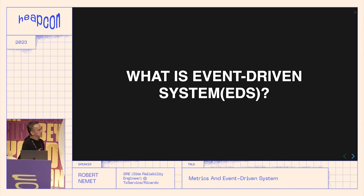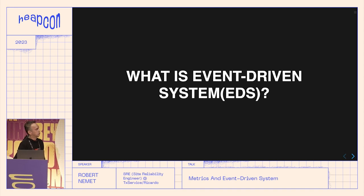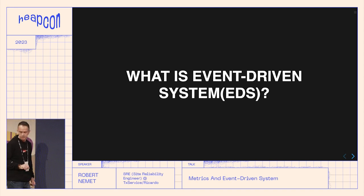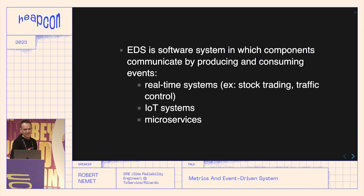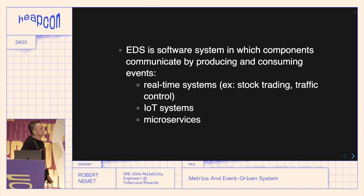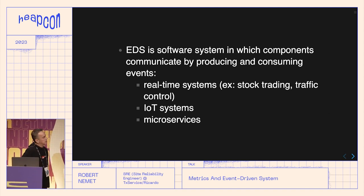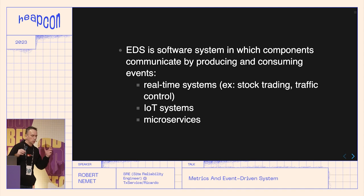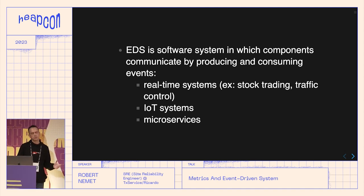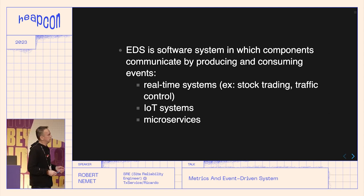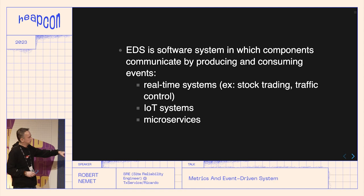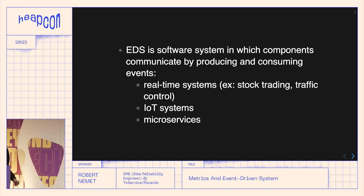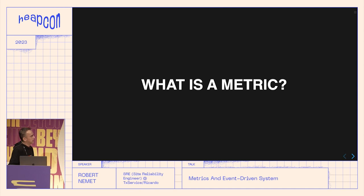This is when we hit the bottleneck: what should I measure? To start, we need to define event-driven systems. An event-driven system is a software system where components communicate by consuming and producing different kinds of events. We see this in real-time systems, streaming systems, and microservices — most of us are working in microservices. Then we also need to define what a metric is.